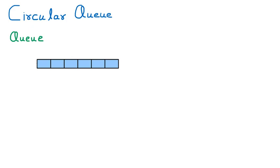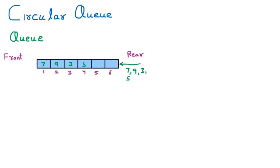We are learning the circular queue. First, a small glimpse of the normal queue: we have an array acting like a queue with positions on which we place elements like 1, 2, 3, 4, 5, and 6. The queue always has a front and rear. Insertion always takes place from the rear side. We insert elements like 7, 9, 3, 5, and 7, each coming in from the rear side.